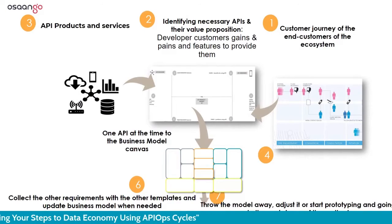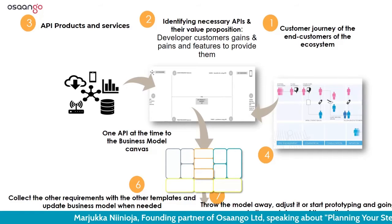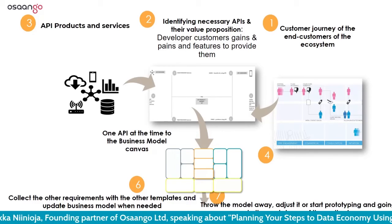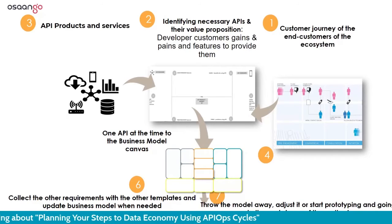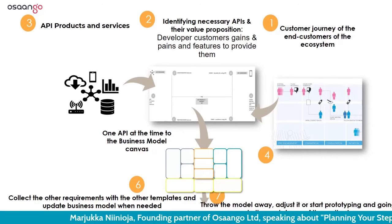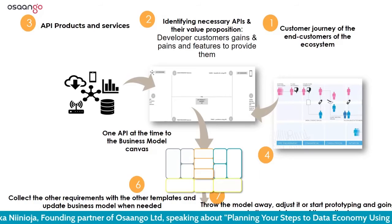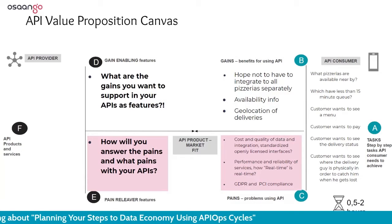Here's the beginning part in a diagram. You would have the customer journey and the value proposition identified from gains and pains, features, and starting from the customer need or the developer-customer need. Then you would think about how these features go together and form certain APIs and services for data. You pick them one by one, form the business model, and then continue to the other phases.